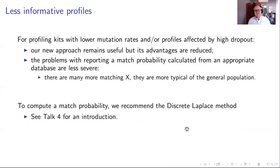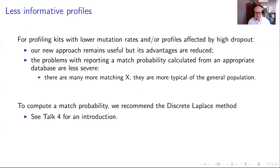I haven't said much about the lower mutation rate case. Our approach is particularly useful for high mutation rate profiles. If you've got a lot of dropout or an older profiling kit without so many loci, it's still useful to think about the number of matching males — that's something a court can comprehend quite well. But the lower the mutation rate, the bigger that number will be and the more well-mixed it will be into the population, so a match probability is not so problematic and could be helpful to the court. If you do want to take a match probability approach, we recommend the discrete Laplace method, which my colleague Michael has contributed to the development of, described in more detail in talk four of this series.